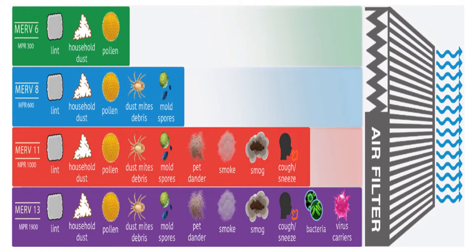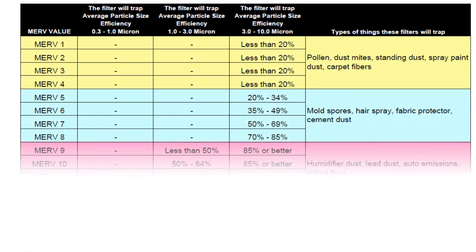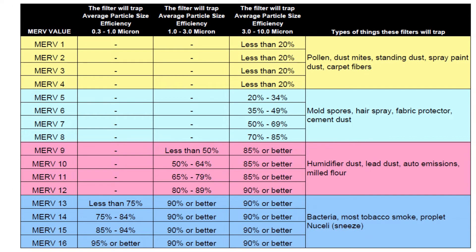We can see from this picture what pollutants and contaminants can be filtered based on the MERV rating. For example, MERV 8 can filter lint, household dust, pollen, dust mite debris, and mold spores. This is one of the very useful MERV rating efficiency tables for your reference, showing MERV ratings and their efficiency percentages.